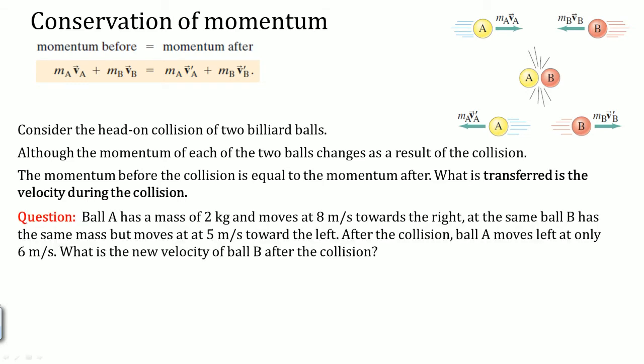Here's the question: Ball A has a mass of 2 kilograms and moves to the right at 8 meters per second. At the same time, ball B has the same mass but moves at 5 meters per second toward the left. After the collision, ball A moves to the left at only 6 meters per second.